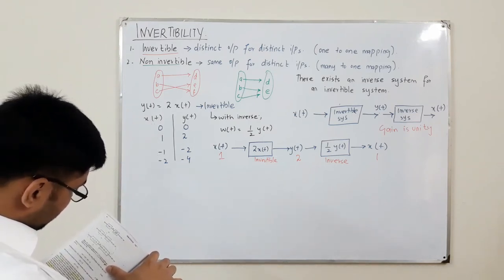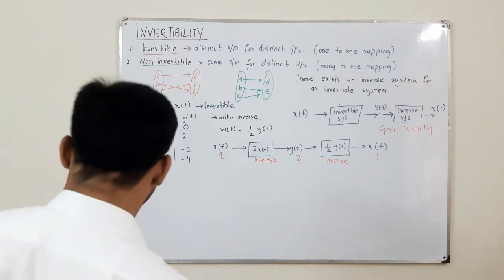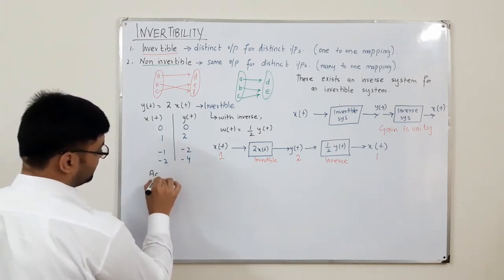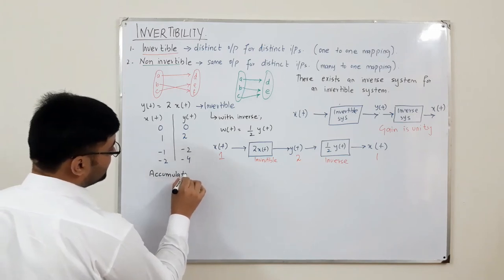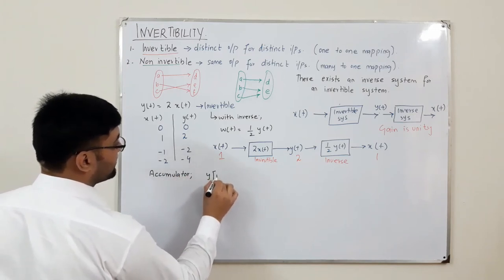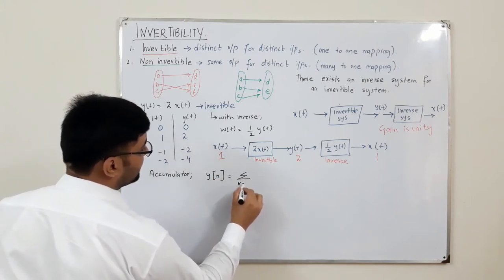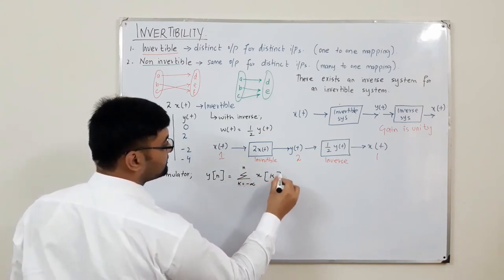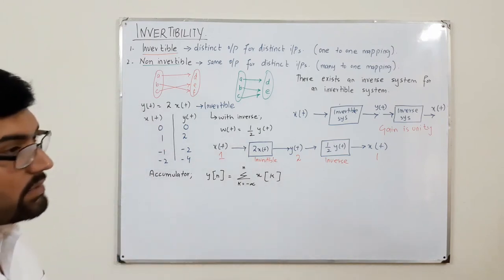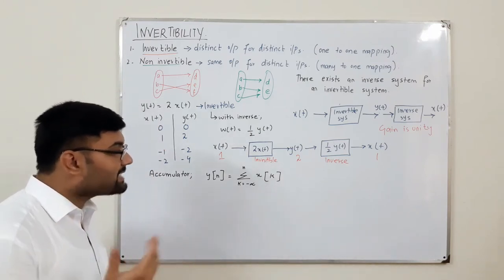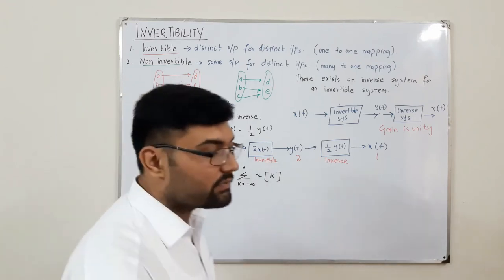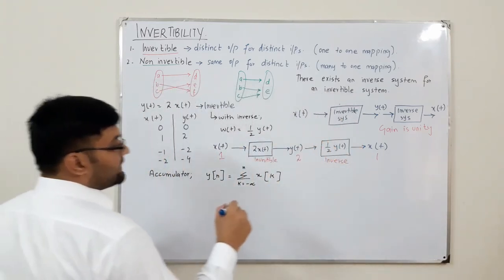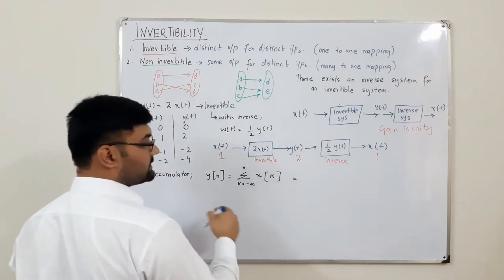For discrete time, we consider the example of the accumulator. The accumulator computes the sum: y[n] = Σ x[k] from k = -∞ to n. To prove this is invertible or non-invertible, we check if an inverse system exists — meaning the output of that inverse system equals the current input x[n].